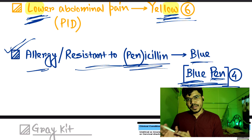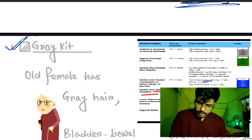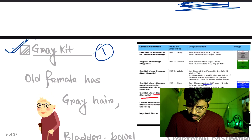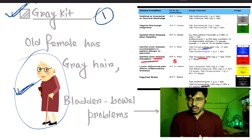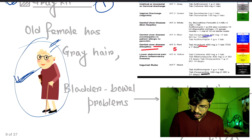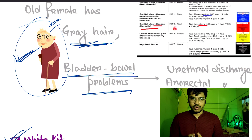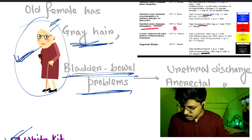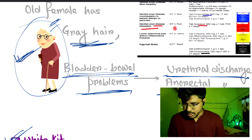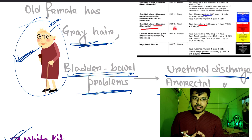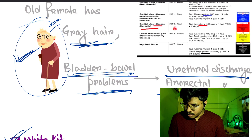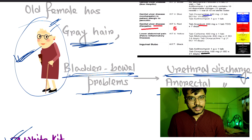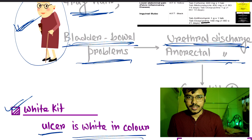Gray kit is kit number one. To remember this, picture an old woman with gray hair. An old woman has bladder and bowel problems, meaning urethral discharge or anorectal discharge. So gray hair, old woman, bladder and bowel problems — that gives us urethral and anorectal discharge. The kit used is gray kit, kit number one.